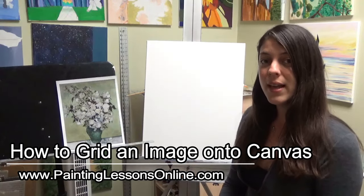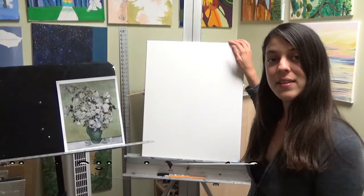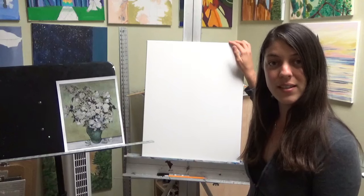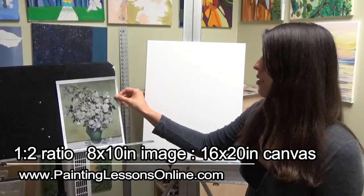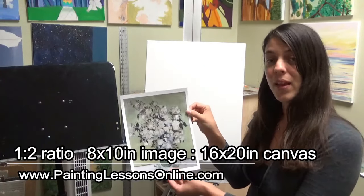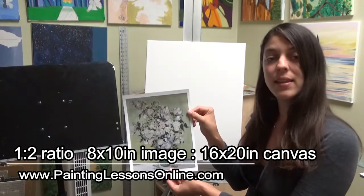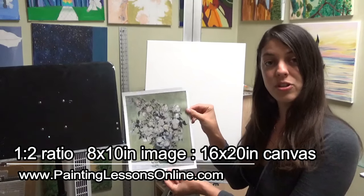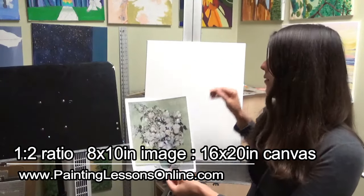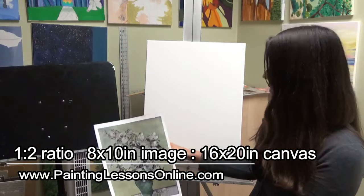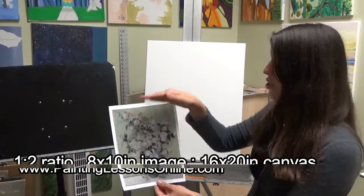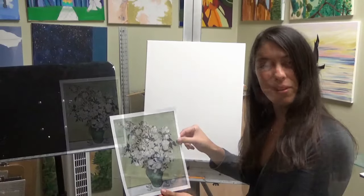What you'll need to do is measure your canvas. This is a 16 by 20 inch canvas and then divide that into two for each dimension to print out your image. So this is an 8 by 10. I'm going to divide this image into 1 inch squares and divide this canvas into 2 inch squares. So we've got 8 inches to 16, 10 inches to 20. It's just double the value.